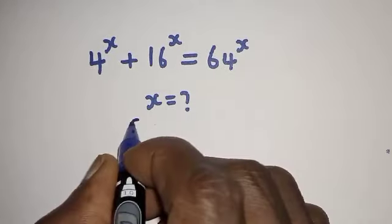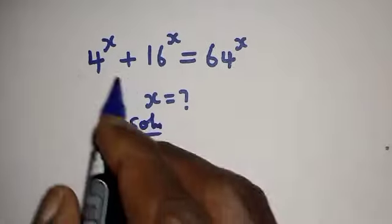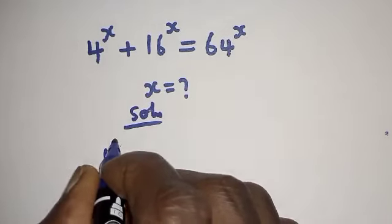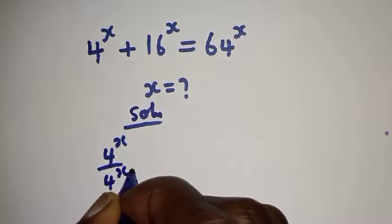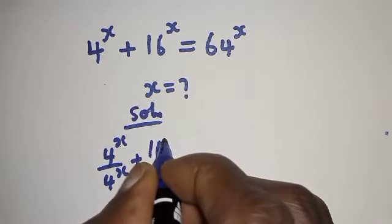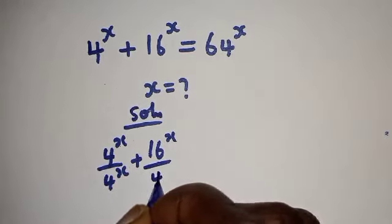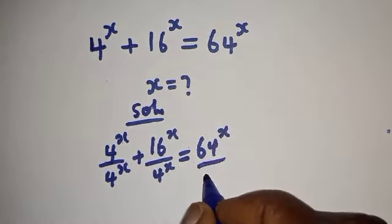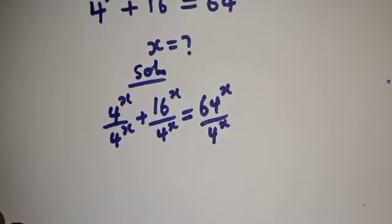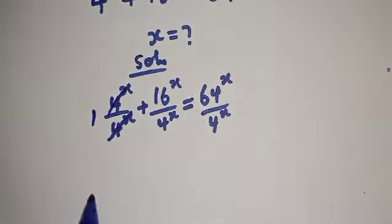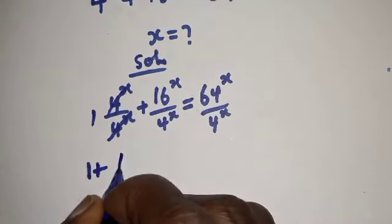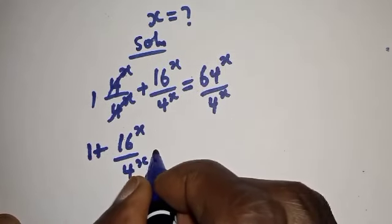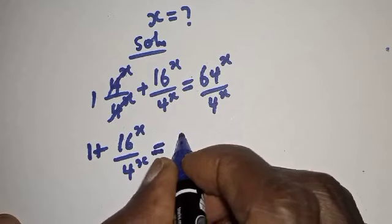Solution: let's divide both sides by 4 raised to power s. That is 4 raised to power s over 4 raised to power s, plus 16 raised to power s over 4 raised to power s, is equal to 64 raised to power s over 4 raised to power s. This one will cancel, giving us 1 plus 16 raised to power s over 4 raised to power s is equal to 64 raised to power s over 4 raised to power s.